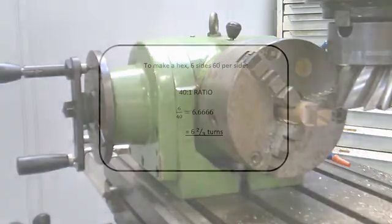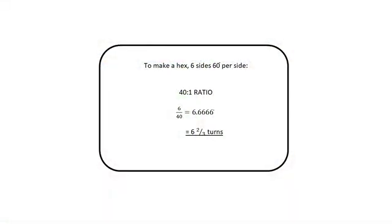So a square is probably the easiest option we can produce on a dividing head. Let's look at a more complicated version. In this example we're looking at making a hex, for example, the head of a bolt. Six sides, 60 degrees per side in our 40 to 1 ratio head. So 6 goes into 40, 6.66 recurring, which gives us 6 and 2 third turns on the handle to produce our 60 degree sides.